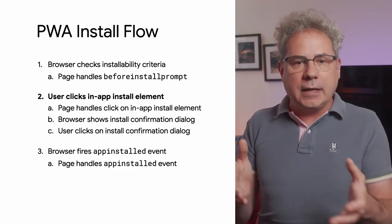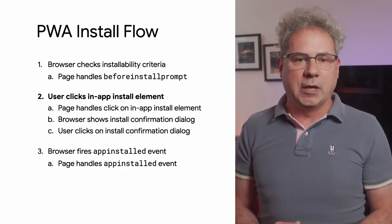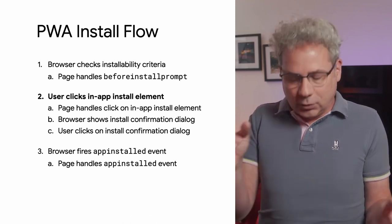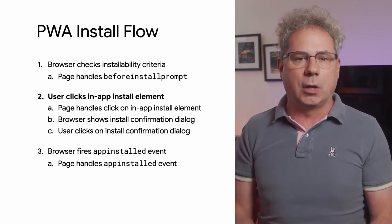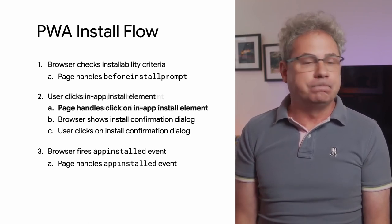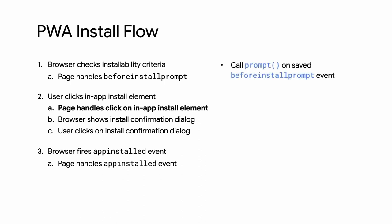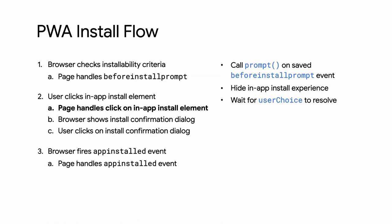The UI is now updated, indicating that the user can install the PWA. Now the PWA just has to wait until the user clicks on one of the in-app install elements. With that click, the page calls prompt on the saved beforeinstallprompt event, causing the browser to show the install confirmation dialog. This is also a good time to hide the in-app install elements and log an analytics event to measure the effectiveness of the install flow. Using the information from the web app manifest, the dialog shows the user the name and icon of the app, allowing the user to verify what they're installing.